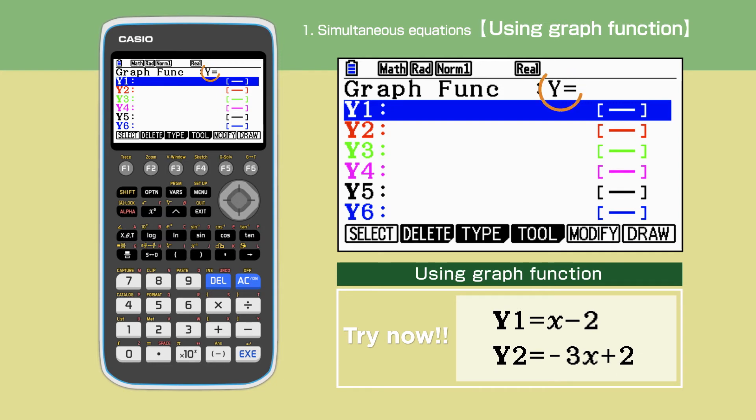Check that the graph function shows Y equals, then enter both equations in the calculator. Again, X needs to be entered using the X theta T key and the bracket minus key for negative numbers.